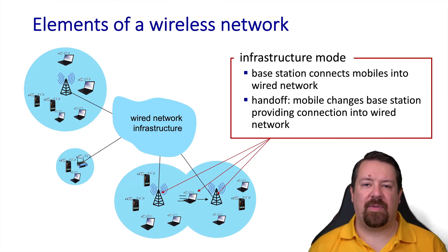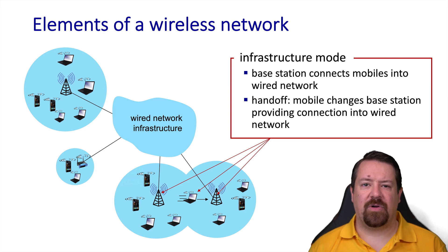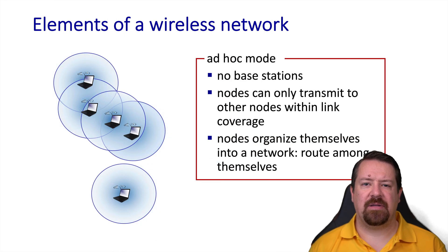So far we've been talking about infrastructure-based wireless networks, meaning the wireless network relies on fixed infrastructure — base stations, cell towers, and wired backhauls — in order to function. The wireless nodes do not talk to one another directly; they only talk to the base station. There are also handoff mechanisms in place so that a mobile wireless node can transition from one base station to another relatively seamlessly.